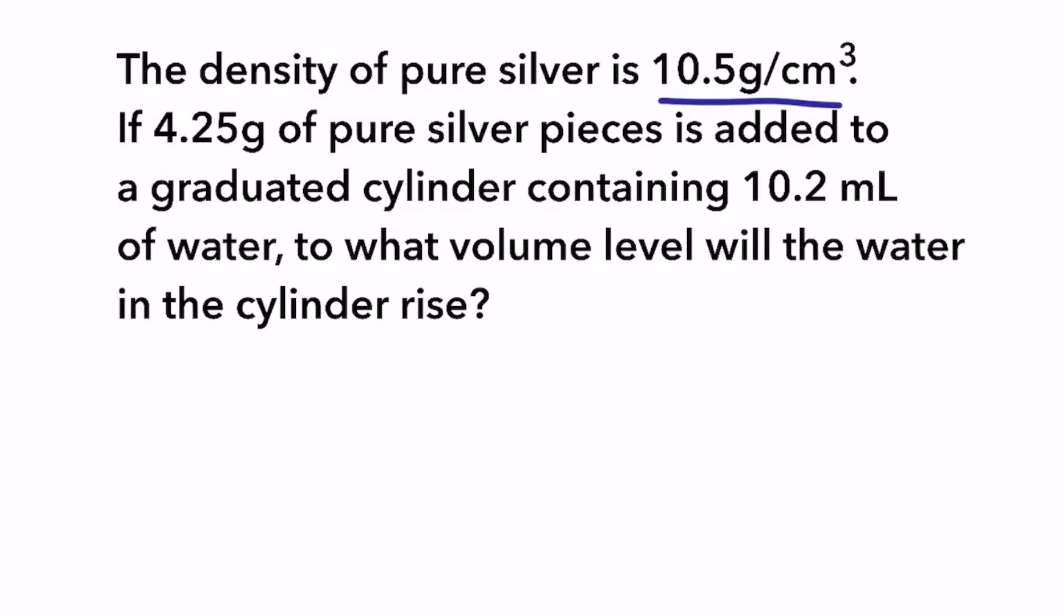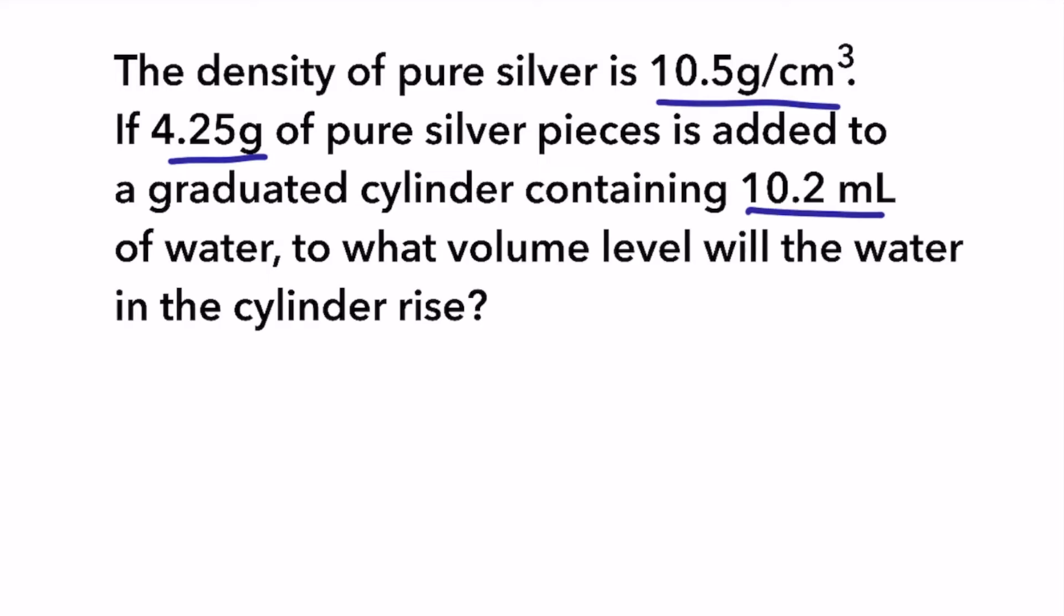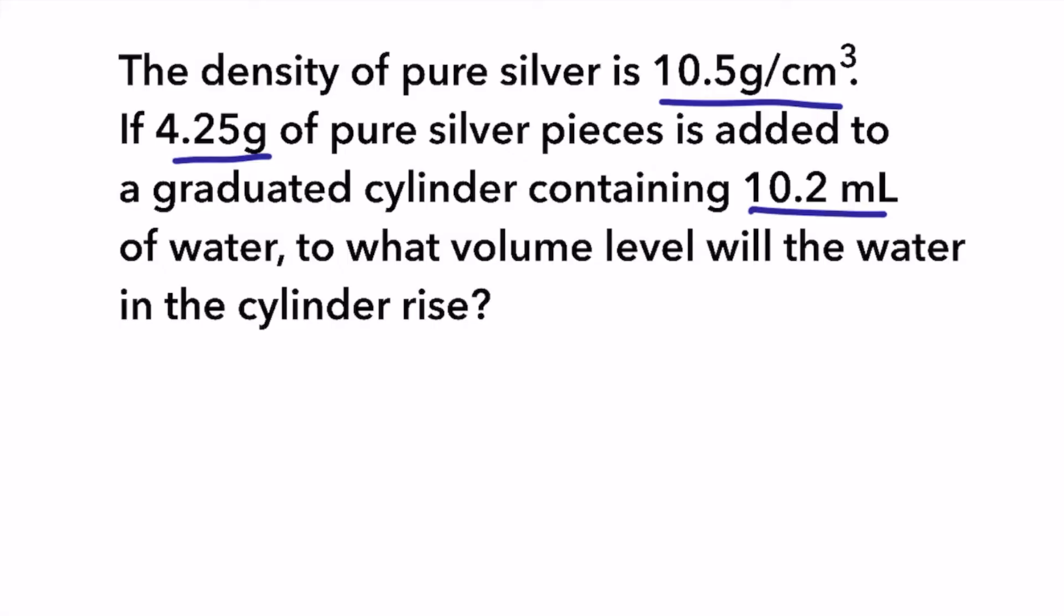The density of pure silver is 10.5 grams per centimeter cubed. If 4.25 grams of pure silver pieces is added to a graduated cylinder containing 10.2 milliliters of water, to what volume level will the water in the cylinder rise? To solve this problem, first we have to find the volume of the silver pieces. To do that, we use the rearranged density formula volume equals mass divided by density, substitute the values, and divide 4.25 grams by 10.5 grams per cubic centimeter to get a volume of 0.4 cubic centimeters.